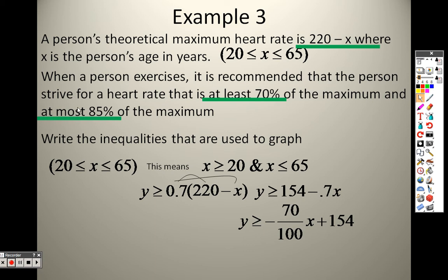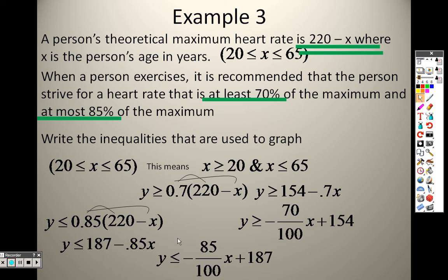At most, I'm going to say y is less than or equal to 0.85, because I want my answer to be less than 85% of the heart rate, which is 220 minus x. I distribute that through to get y is less than or equal to 187 minus 0.85x. I would write that as negative 85 over 100 x plus 187.